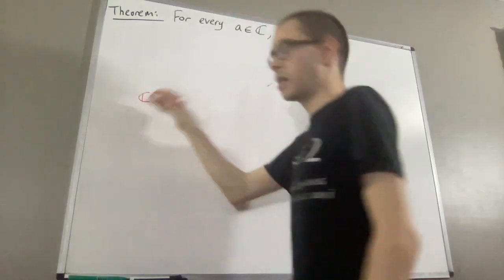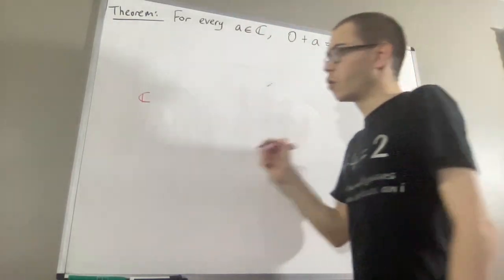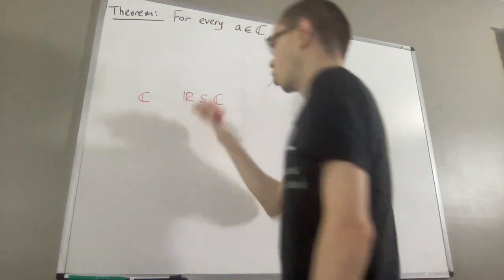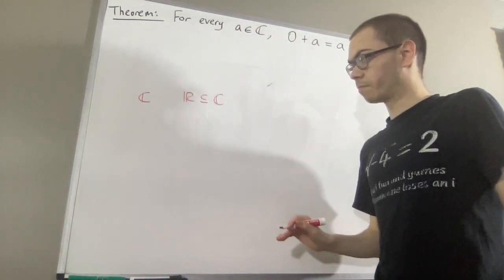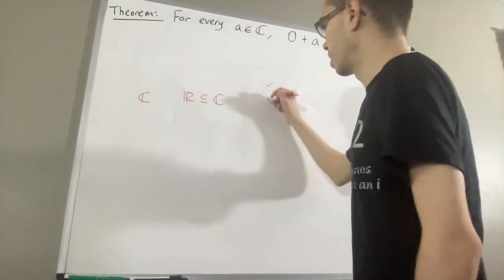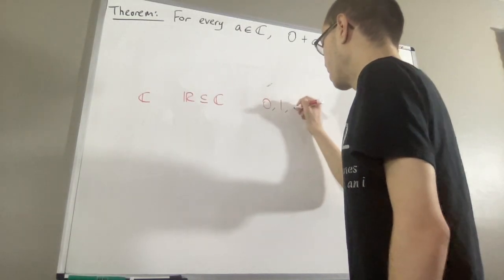So let's remind ourselves what we're working with. We have a set C called the set of complex numbers. We have a subset of the complex numbers R, called the set of real numbers. We're given three elements of the complex numbers: 0, 1, and i.